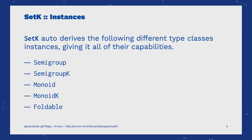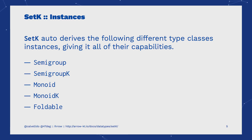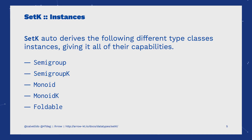The type classes available for a SetK are Semigroup, SemigroupK, Monoid, MonoidK, and Foldable. Unlike other wrappers like ListK or SequenceK, SetK doesn't derive Functor, Applicative, Monad, or Traverse. This is due to the lack of ordering guarantees on a Set data structure.